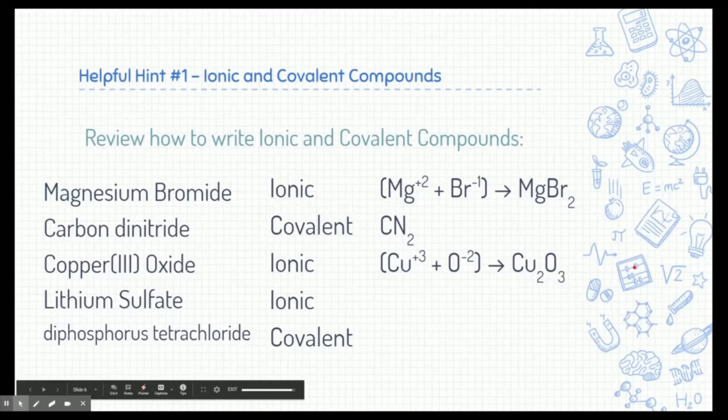Lithium sulfate is ionic, so we need to worry about charge. Lithium is a plus one. Sulfate is a polyatomic ion found on the bottom part of the front of our periodic table. Sulfate is SO4, and its charge is minus two. Therefore, we need two lithiums and only one sulfate in order to make lithium sulfate.